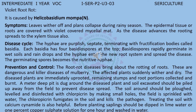Coming to the disease cycle: the hyphae are purplish septate, terminating with fructification bodies called basidia. Each basidia has four basidiospores at the top. Basidiospores rapidly germinate in wet soils and raindrops, and the hyphae enter the new root system and spread the disease. The germinating spores become the nutritive hyphae.